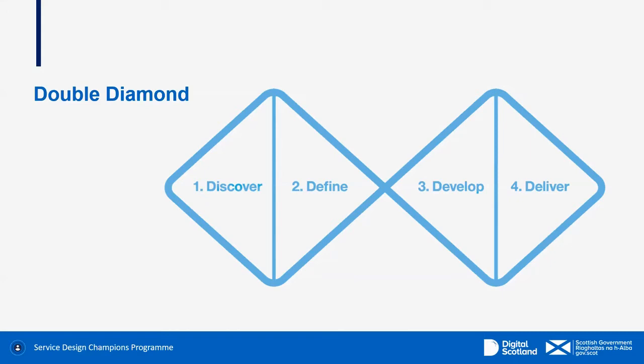By taking a service view and really understanding what your users are experiencing, you start to unearth the issues and problems people face. Many organisations have already decided on a solution and feel they understand the problem — but all too often, that problem is only understood through the lens of the organisation and not from the users. This first part of the double diamond is the part we encourage people to spend the longest time in. If we're not starting with understanding the problems, we won't know whether we've solved them by the end. Service designers also establish what I call the moments of truth in the journey, where we can start to measure the impacts we're actually having.